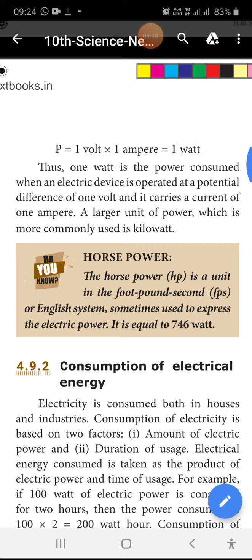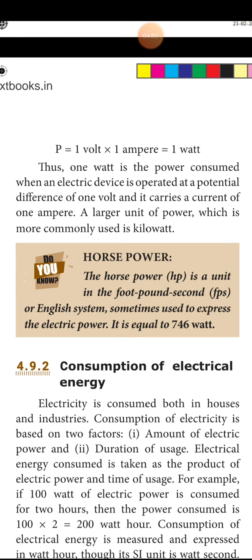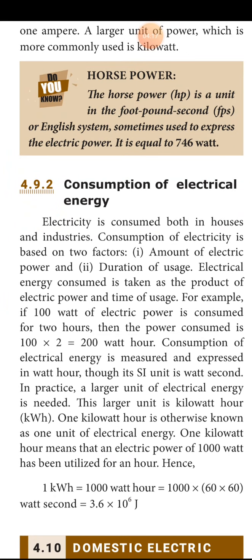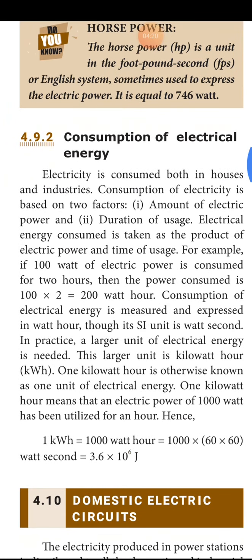Thus 1 watt is the power consumed when an electrical device is operated at a potential difference of 1 volt and carries 1 ampere current. The large unit of power more commonly used is kilowatt. There is also horsepower — you can see horsepower in transformers. The foot-pound-second is the FPS system, an English measuring system. Sometimes we express electrical power in horsepower, which is equal to 746 watts. One kilowatt is 1000 watts.